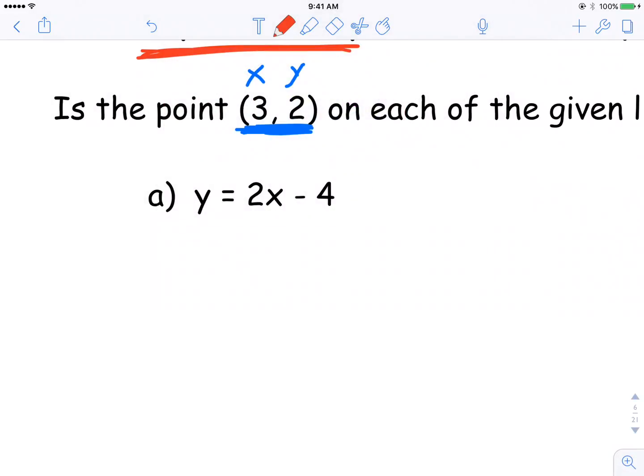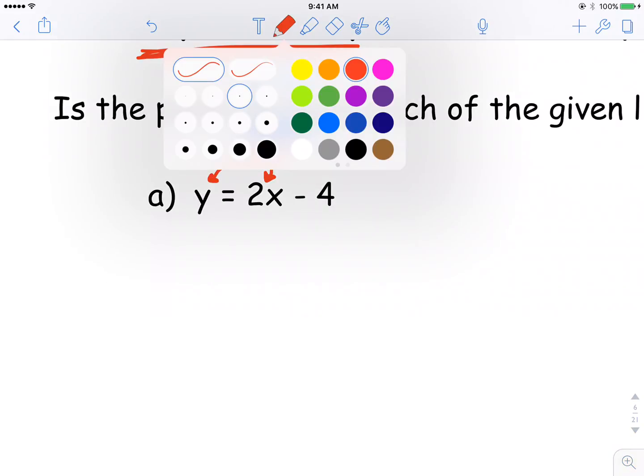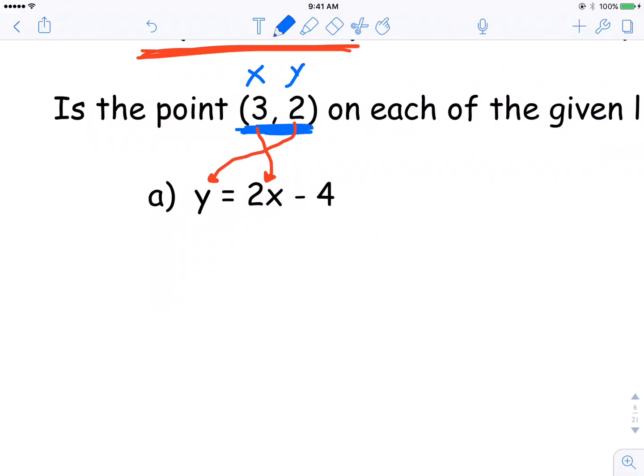So this being the x, 3 is going to go in for x. This being the y, 2 is going to go in for y. So my new equation looks like this: 2 is equal to 2 times 3 minus 4. All I've done is substituted in the x and the y. Now I simply work out both the left and the right-hand side of the equal sign and see if it holds true. Well, nothing changes on the left-hand side. 2 times 3 is 6, 6 minus 4 is 2. So yes, this holds true.